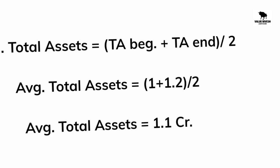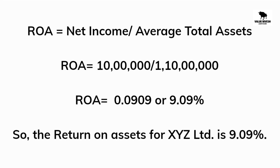Now we can use this information to calculate return on assets. Return on assets equals net income divided by average total assets, which is 10 lakh divided by 1.1 crore, which equals 0.0909, or 9.09%. So the return on assets for XYZ Limited is 9.09%.